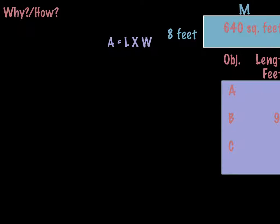So why are we doing this? Because we need to really understand area and perimeter and how to figure out properties of rectangles — how opposite sides are congruent and how to figure out the missing side lengths. So we're going to be doing lots of things to help us with that today.